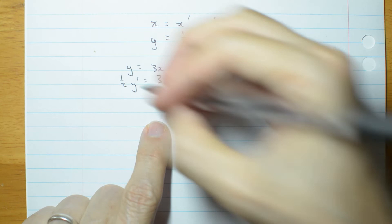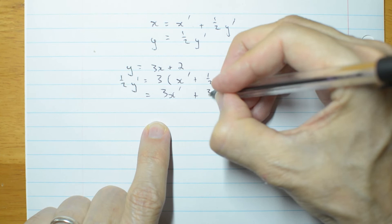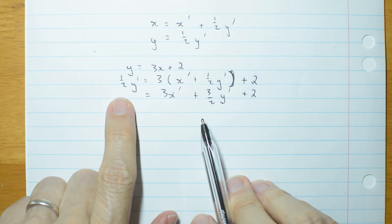OK, let's expand the brackets. 3x prime, plus 3 on 2y prime, plus 2.